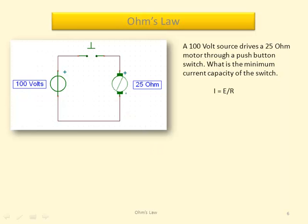Well, we know that current equals voltage divided by resistance. So we take the 100 volts and divide it by 25 ohms, and we get a current of 4 amps. Therefore, the push button must be rated for at least 4 amps.